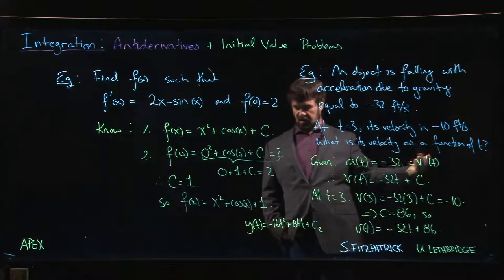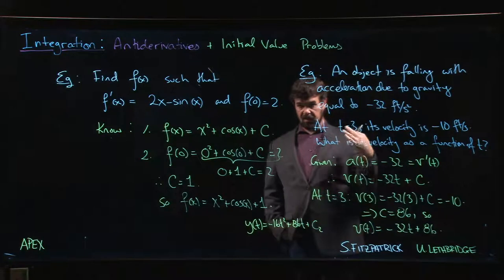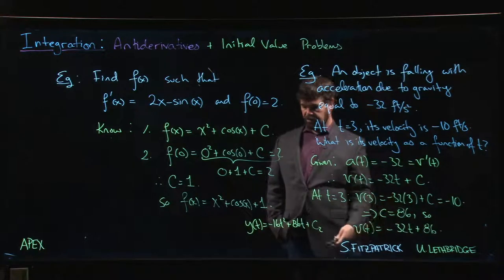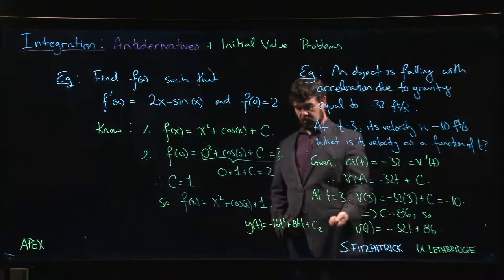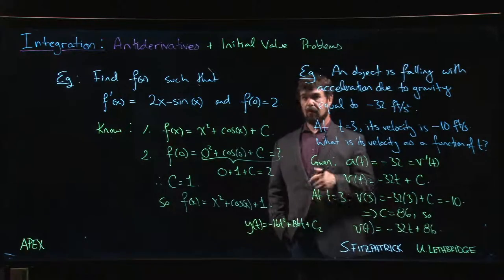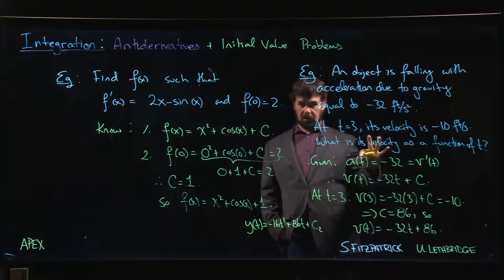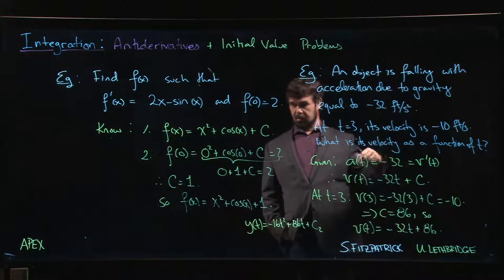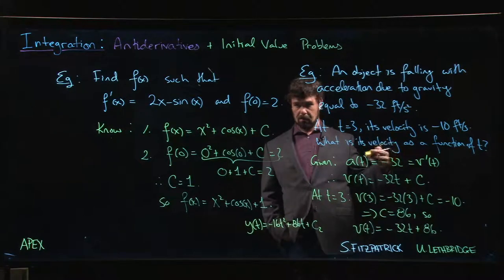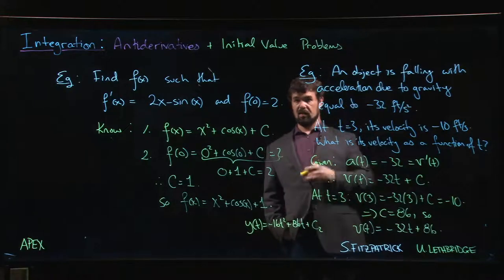We can figure out problems like how long did it take until the object hit the ground, if we define the ground as being when y equals zero. Then we have a quadratic that we have to solve. Lots of interesting problems that you could ask in this context, like a stone is dropped from a building, variations on this problem. They're all solved with antiderivatives given initial values.